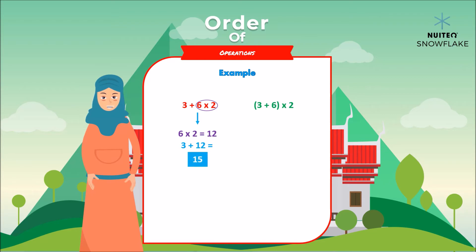In the second expression, we need to solve what's inside the parentheses. First 3 plus 6 is 9, and 9 times 2 is 18. Interesting, right?